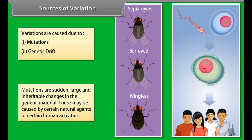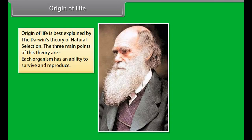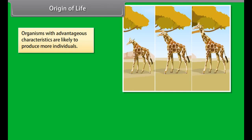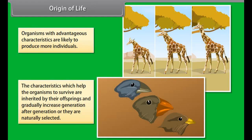Variations are caused due to mutations and genetic drift. Mutations are sudden, large, and inheritable changes in the genetic material, caused by certain natural agents or human activities. Genetic drift is the random change in gene frequency occurring by chance fluctuations. It is inversely proportional to the size of the population, so it is mostly applicable in small populations, increasing the frequency of homozygosity of harmful genes, and provides diversity without any adaptation.